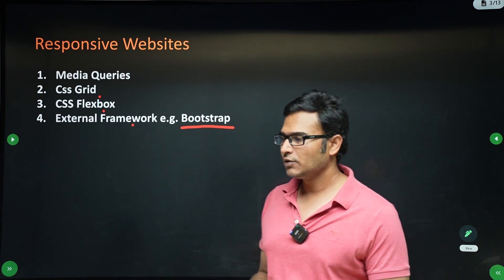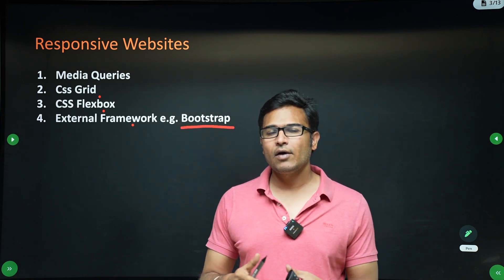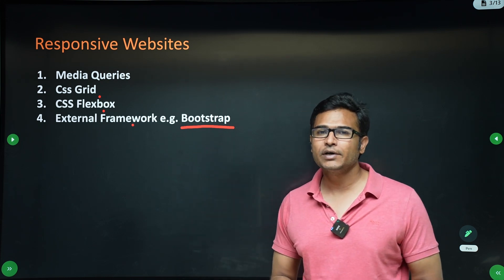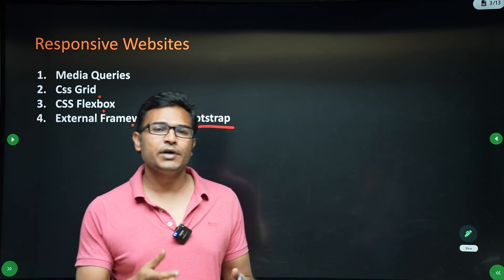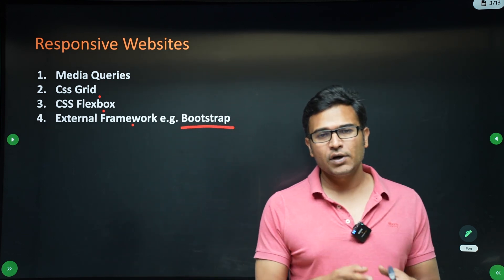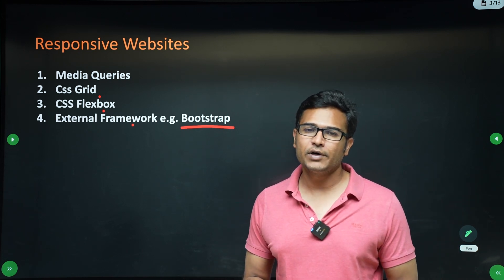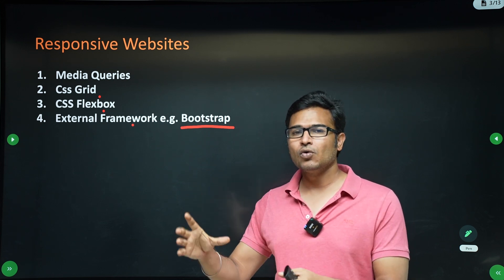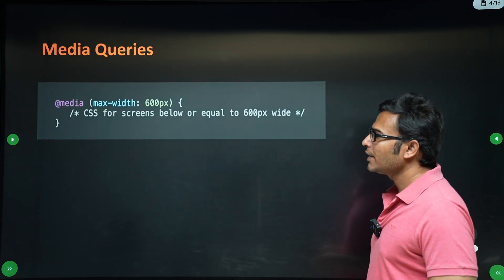Bootstrap was developed at Twitter — it was initially called Twitter Blueprint, then they open-sourced it and now everyone is using it. It is the most popular CSS framework. The difference between a framework and a library is that with a library we call the functions, but with Bootstrap the framework calls our code.